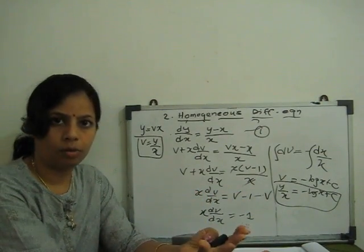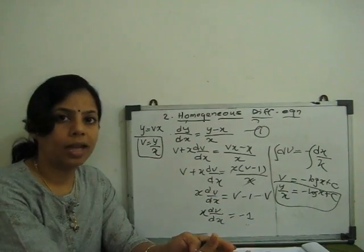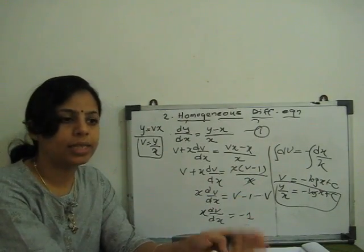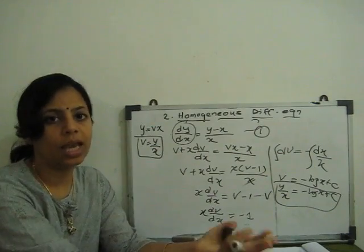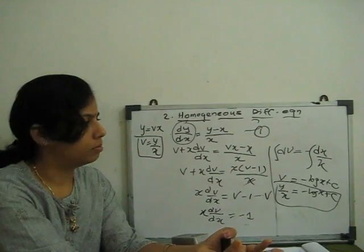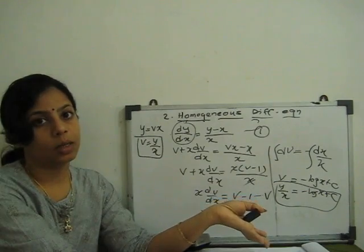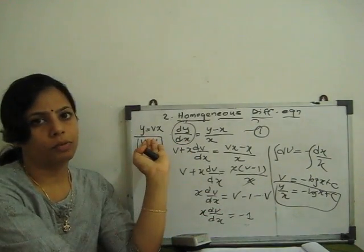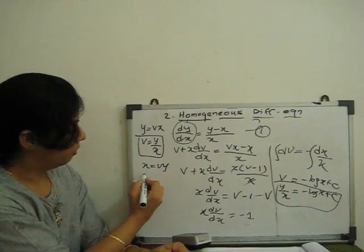So these are the steps: first, check whether the equation is homogeneous or not. Then substitute y in terms of x — that is, y = vx. There is also another way: if it is easier, we can substitute x in terms of y, meaning x = vy. If we substitute x = vy, then at the place of dy/dx we use dx/dy. You have to decide which substitution to use — whichever converts the equation into variable separable form.